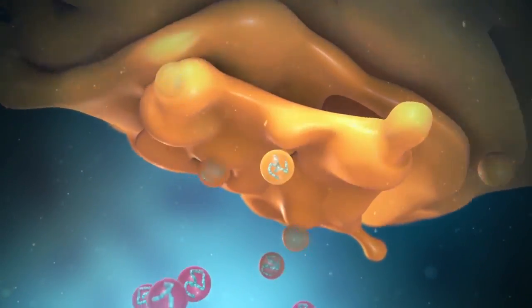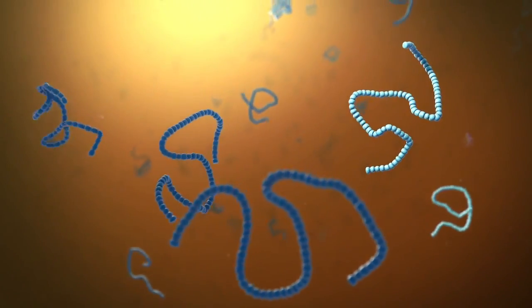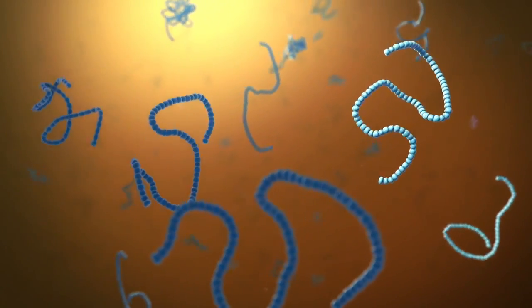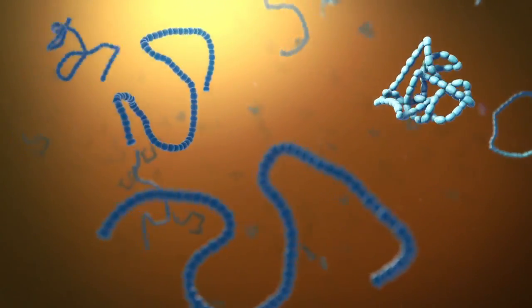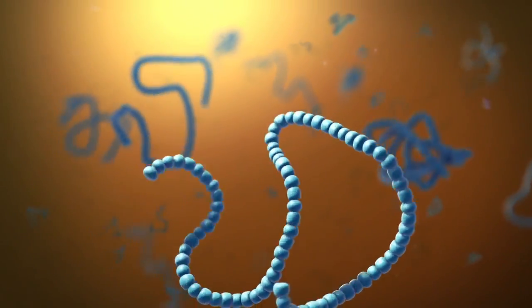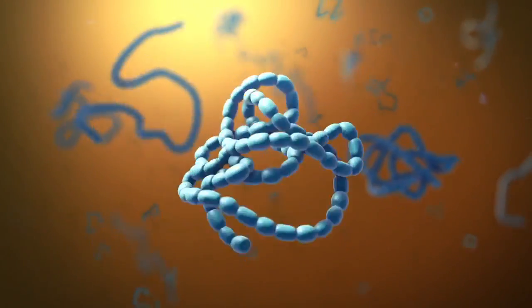There are a lot of ways that Ricin can enter a cell, and once it is inside, it is almost impossible for the cell to defend itself. The toxin moves within the cell to the Golgi apparatus, the post office of the cell.